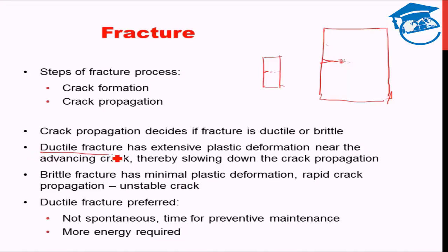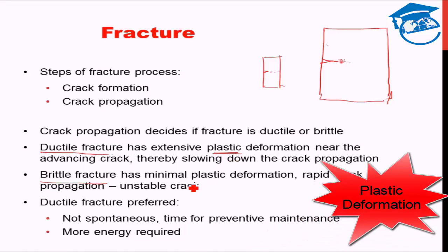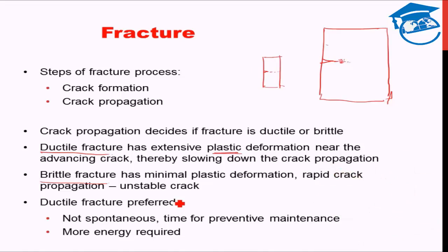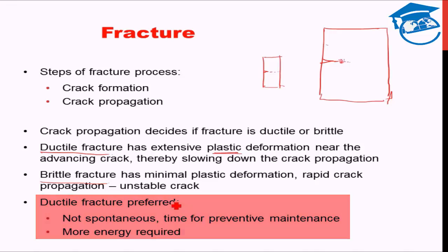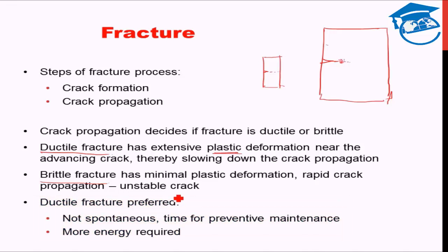That is the basic difference between ductile and brittle fracture — plastic deformation is the keyword. Ductile fracture is the kind of fracture engineers prefer because it is non-spontaneous, meaning there is more time for preventive maintenance. There is scope to identify that the material is going to fracture beforehand, since the fracture takes a lot of time to actually happen.